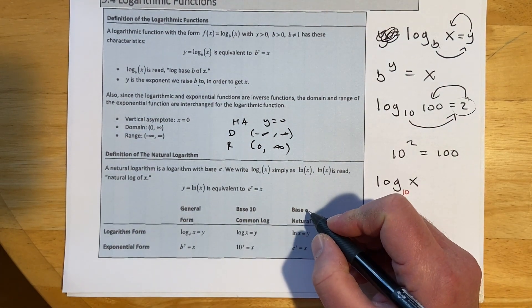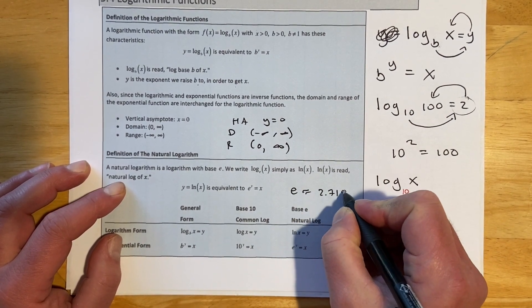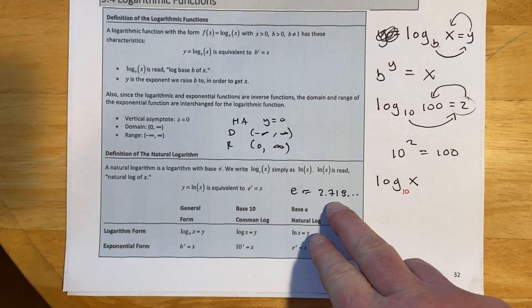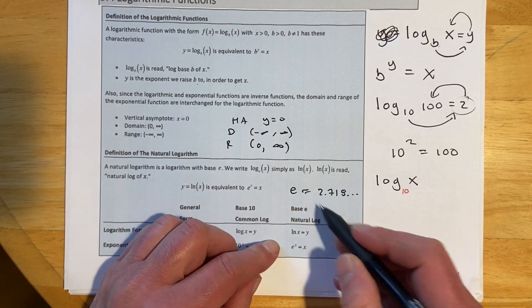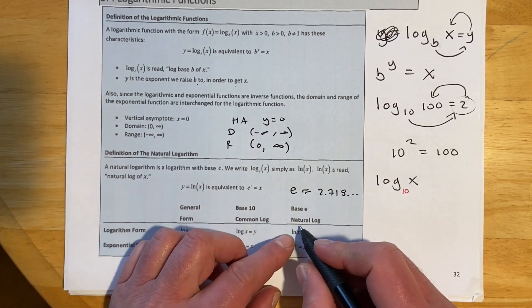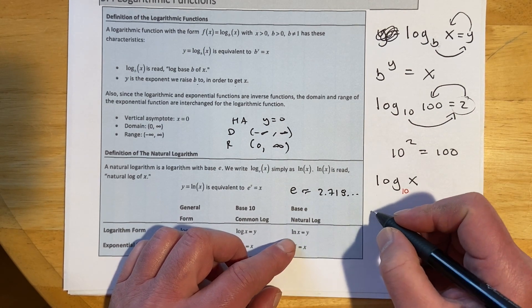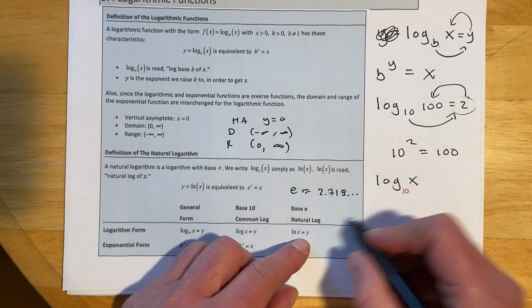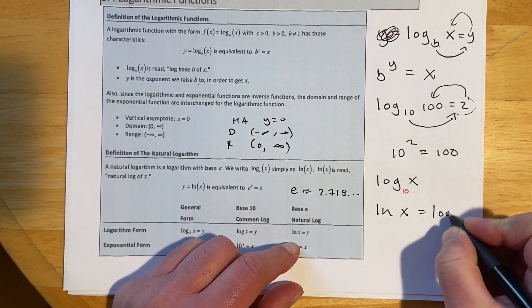We're also going to encounter the number e, which is approximately 2.718 — an irrational number like pi. It turns out to be the easiest function to work with in calculus. Because e is so common, it gets its own notation: natural log, abbreviated ln. A lot of people think that's an 'i' — it's a lowercase 'l,' for 'log natural.'